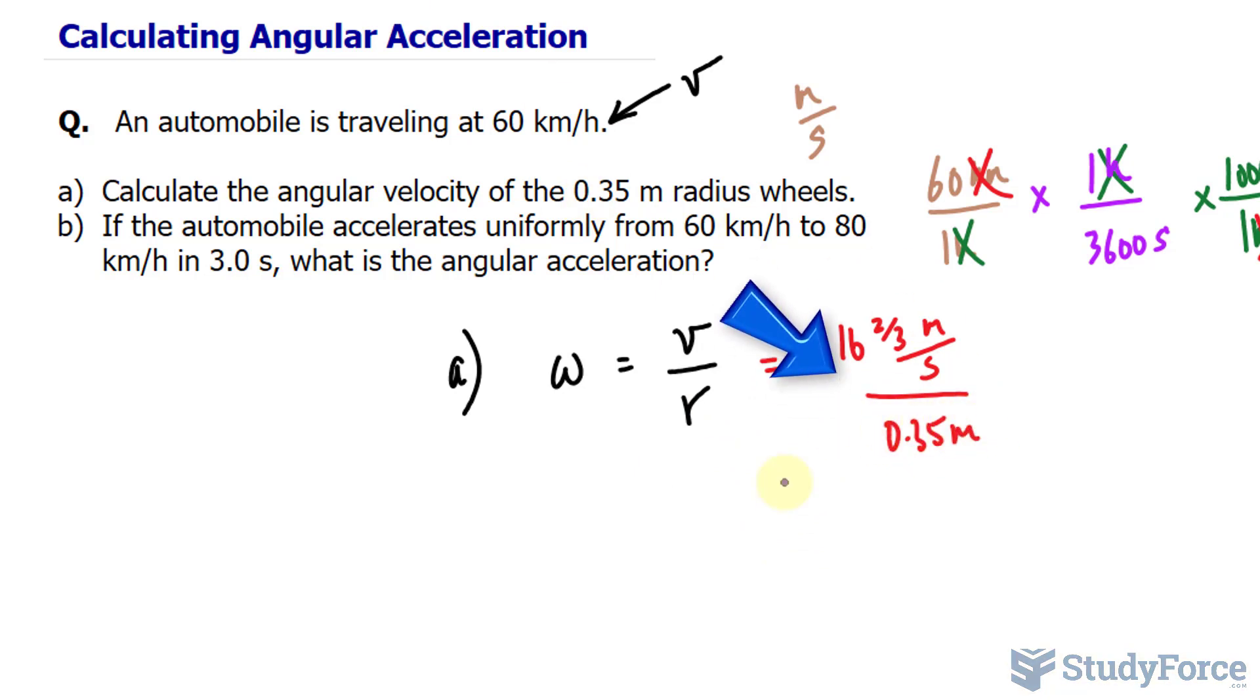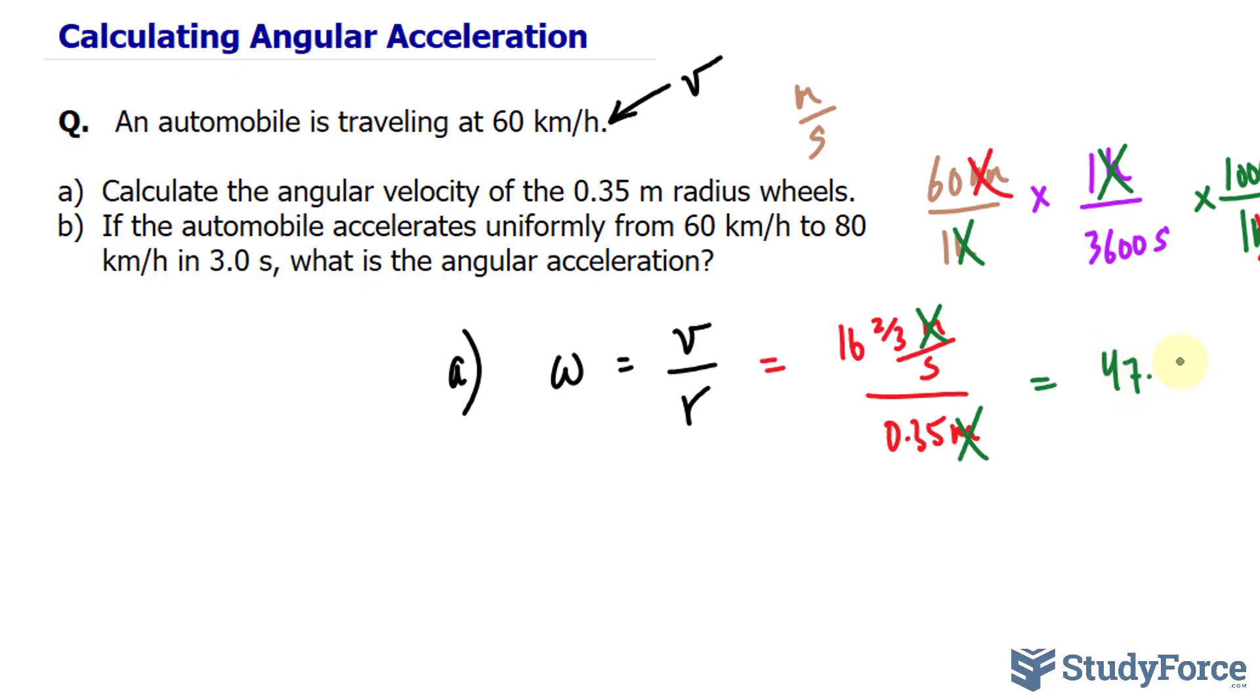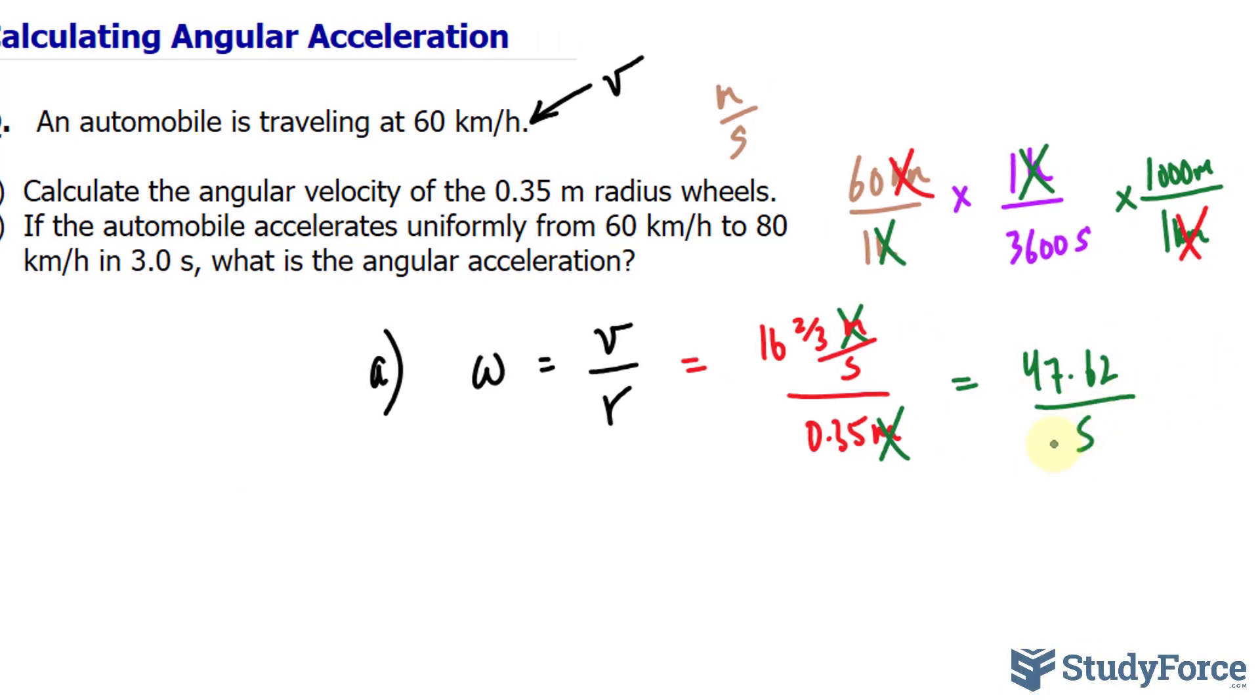Now dividing these two numbers out, the meters unit will cancel out. So we should end up with units that is 1 over seconds. I know that's kind of strange but let me show you. So taking this number that's on our screen, divide that by 0.35 makes 47.62 rounded. 47.62, 1 over seconds or per 1 second.